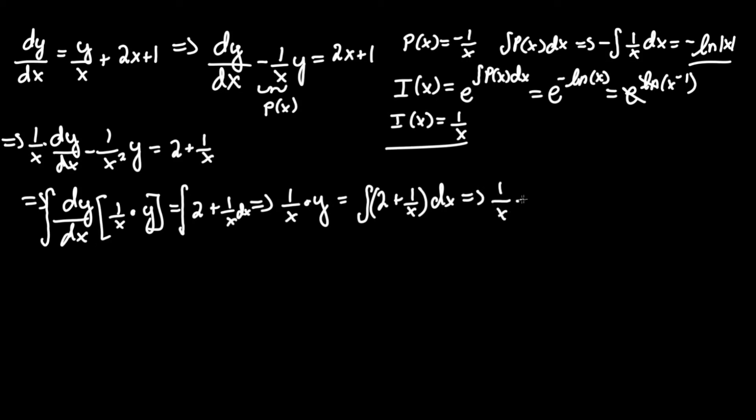This becomes 1 over x times y equals 2x (raising x by one power) plus the integral of 1 over x is ln x, and we can add plus c at the right-hand side since we fully formed the general differential equation.